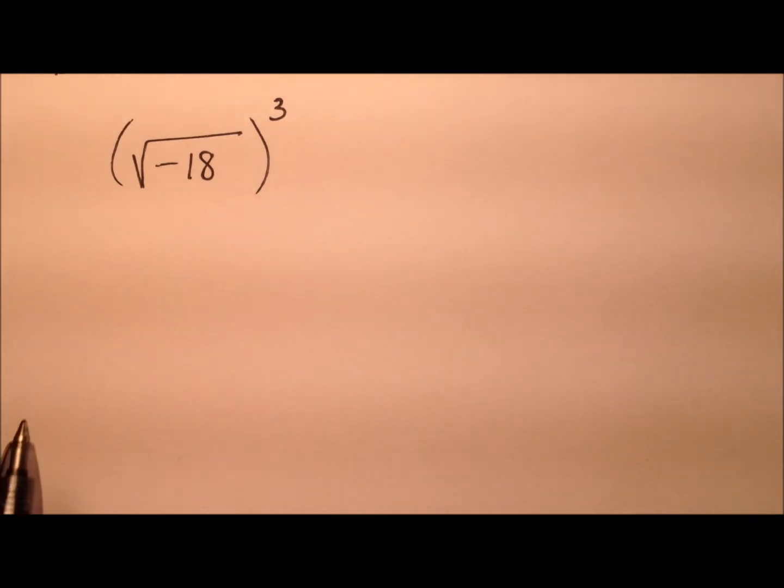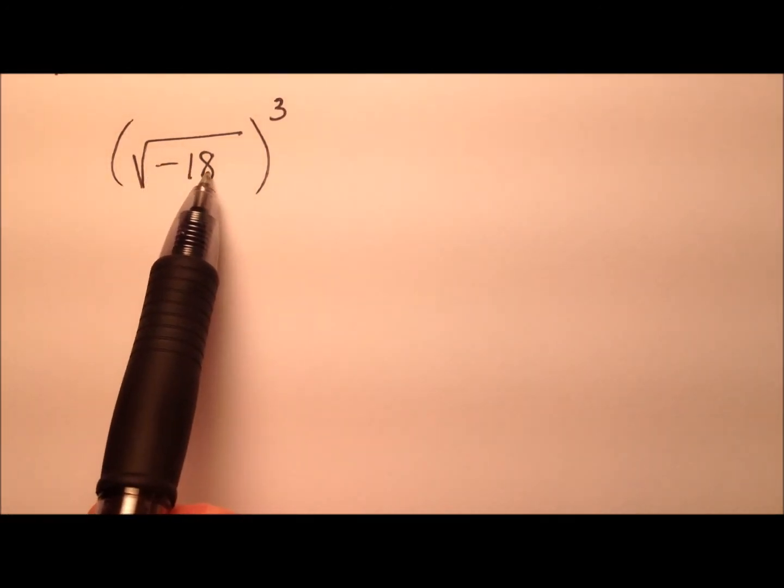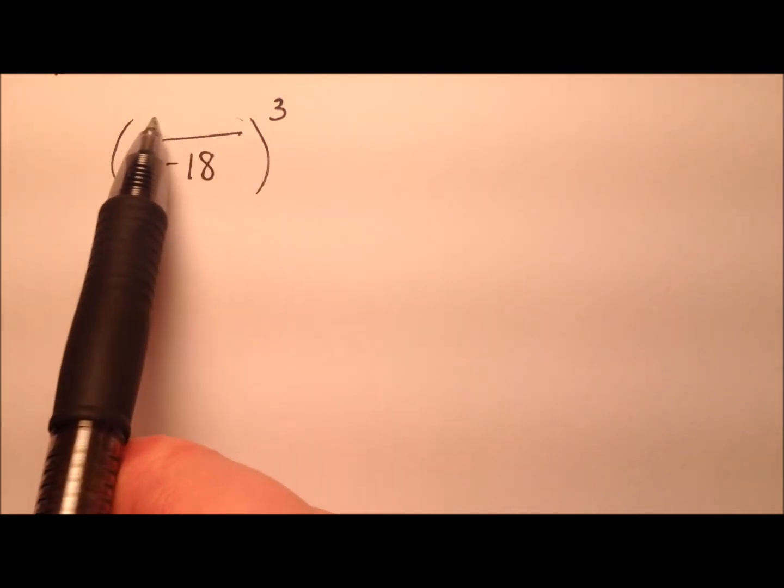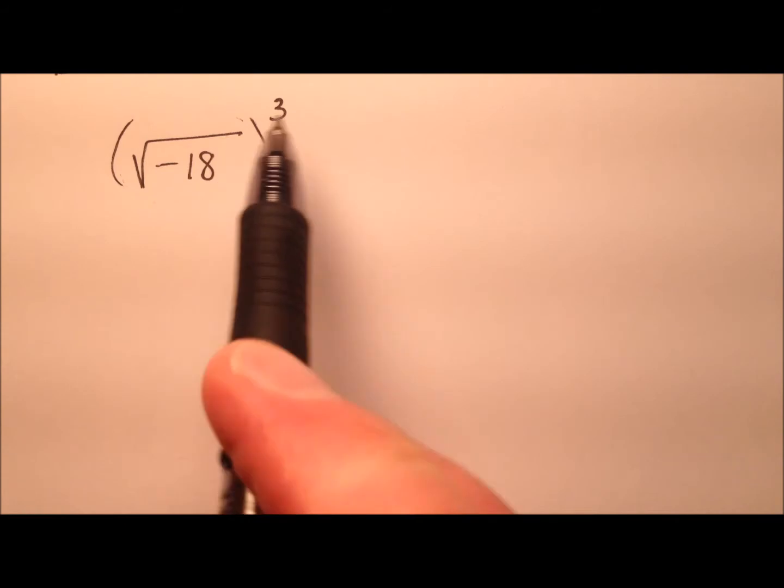In this example, we're going to simplify the square root of negative 18 raised to the power of 3. So let's go ahead and first simplify this square root of negative 18.